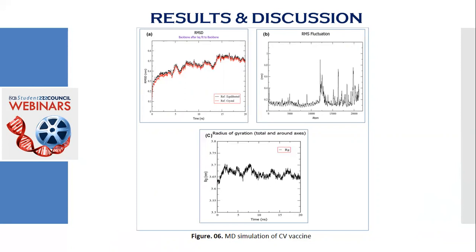And in the graph B, it showed the RMS fluctuations of all the atoms about its average position. The peaks and the dips in the graph denote the flexibility of the corresponding region in the molecular structure. Finally, the graph C shows the radius of gyration.